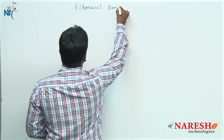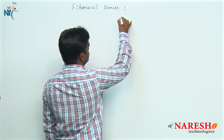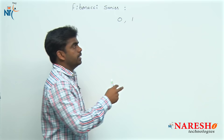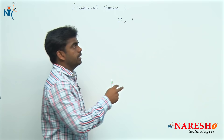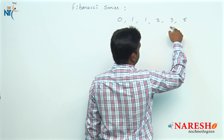Here is the concept of printing the Fibonacci series. What is the Fibonacci series? The series starts with 0 and 1. If you add these two subsequent values: 0 plus 1 is 1, 1 plus 1 is 2, 1 plus 2 is 3, 2 plus 3 is 5, 3 plus 5 is 8, 5 plus 8 is 13. This is the Fibonacci series.